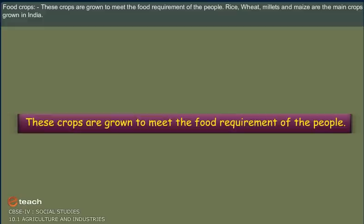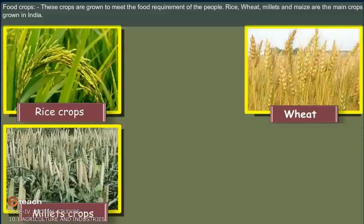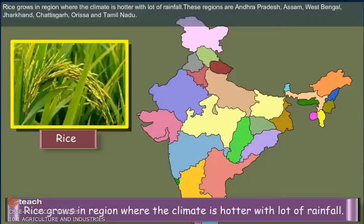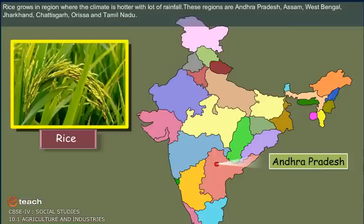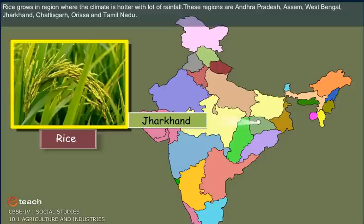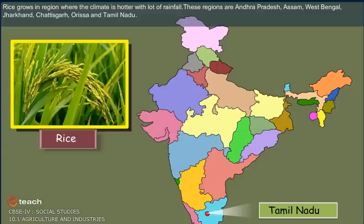Food crops are grown to meet the food requirement of the people. Rice, wheat, millets, and maize are the main crops grown in India. Rice grows in regions where the climate is hotter with lots of rainfall. These regions are Andhra Pradesh, Assam, West Bengal, Jharkhand, Chhattisgarh, Orissa, and Tamil Nadu.